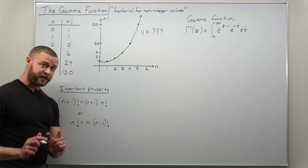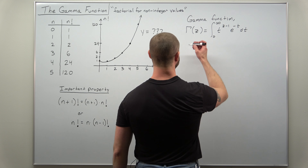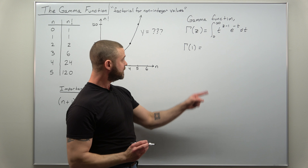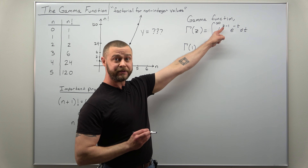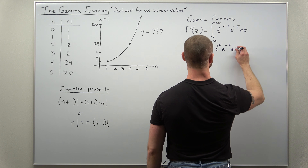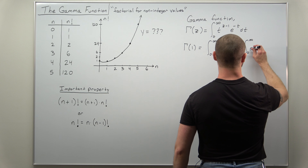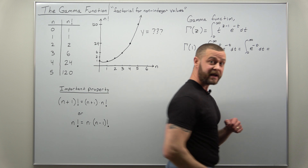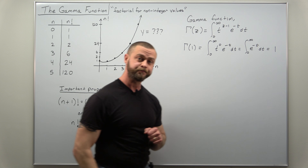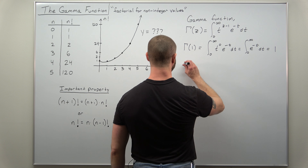This definition as an improper integral is not obviously related to factorials, but we'll get to that later. Let's start with some basic values. Plugging in z equals one: notice z appears in the exponent of t, so you get t to the one minus one, which is t to the zero, times e to the negative t. Since t to the zero is 1, this simplifies to the improper integral from zero to infinity of e to the negative t, which evaluates to 1. So the gamma function of 1 equals 1.